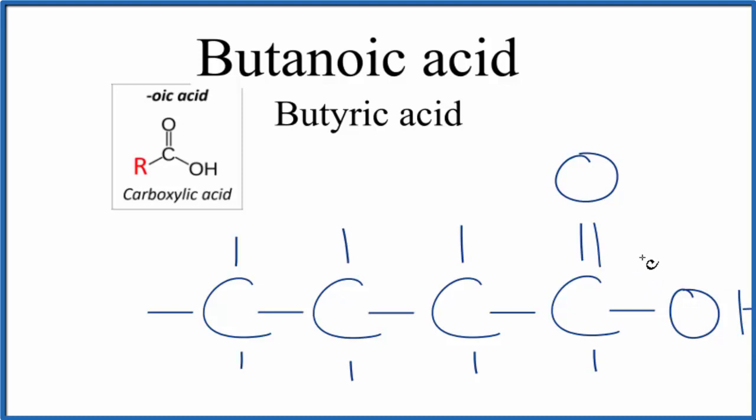Remember that carbon can only have four bonds. So we have one, two, three, four, five. So we're gonna get rid of this one right here to the hydrogen, and now this is the formula for butanoic acid.